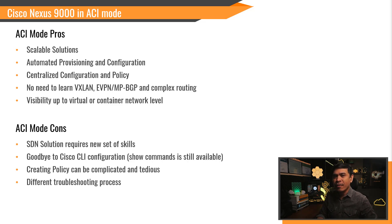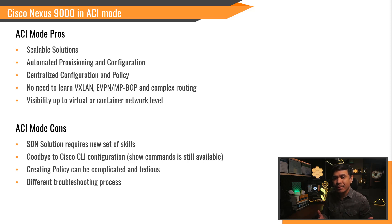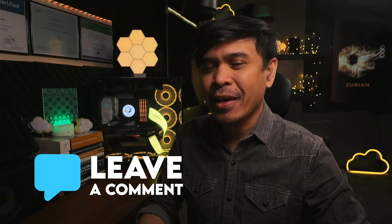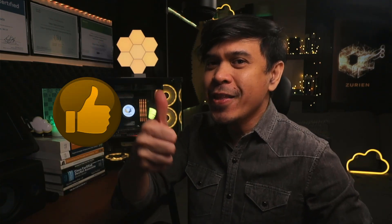Creating policy can be complicated and tedious, and troubleshooting is very different compared to traditional CLI-based switching. If you don't mind learning ACI — which can be complicated at first — and you want to get away from Python scripting, then Cisco Nexus 9000 in ACI mode may be for you. Comment below if you have any questions, and don't forget to hit the like button.